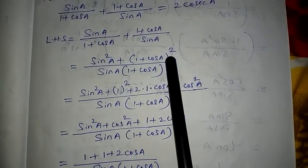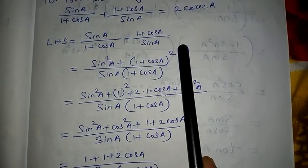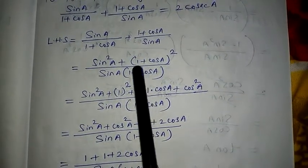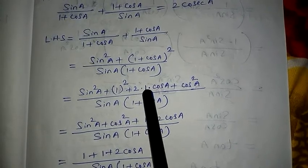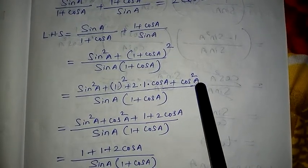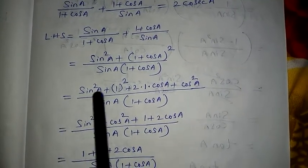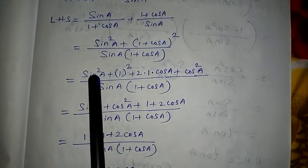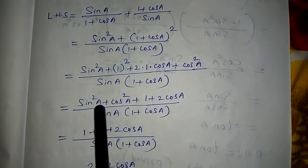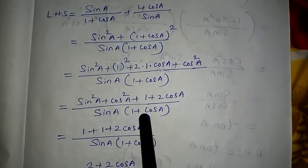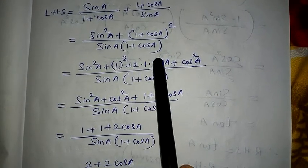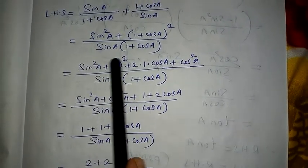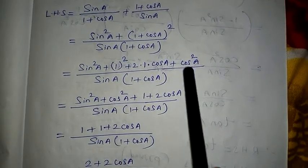Now we have sin²A + (1+cosA)², all over sinA(1+cosA). I expand (1+cosA)² using the formula (A+B)² = A² + 2AB + B²: here A is 1, so 1² = 1; plus 2·1·cosA = 2cosA; plus cos²A. So the numerator becomes sin²A + 1 + 2cosA + cos²A, all over sinA(1+cosA).